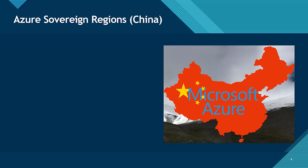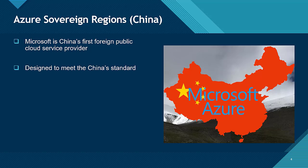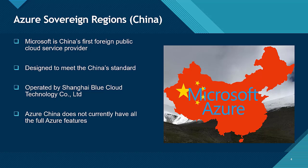Next, we have the Azure Sovereign Region China. China has their own public cloud, and a good example of this would be Alibaba Cloud. Microsoft is China's first foreign public cloud service provider. This instance of Azure was designed to meet the standards required by the government of China, and it is operated by Shanghai Blue Cloud Technology Co. Ltd. Keep in mind that Azure China does not currently have all the full Azure features, but Microsoft is doing their best to update it on a continuous basis.